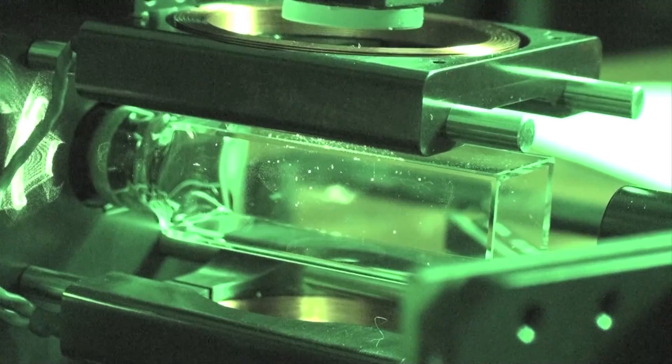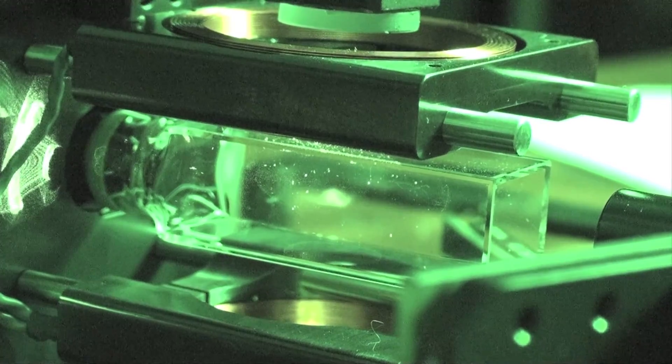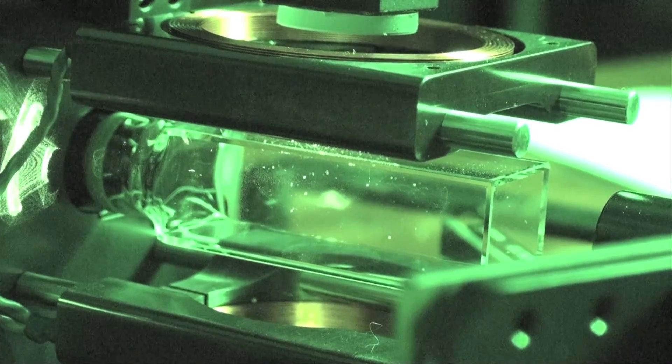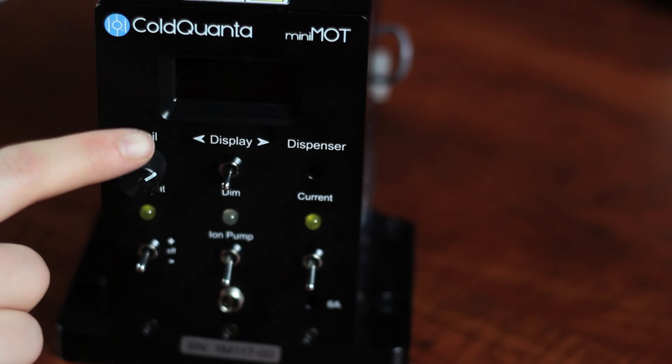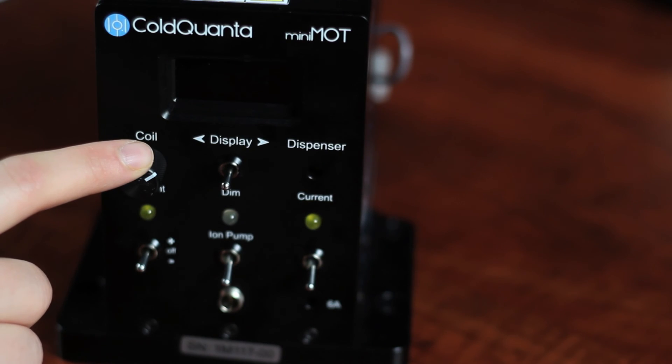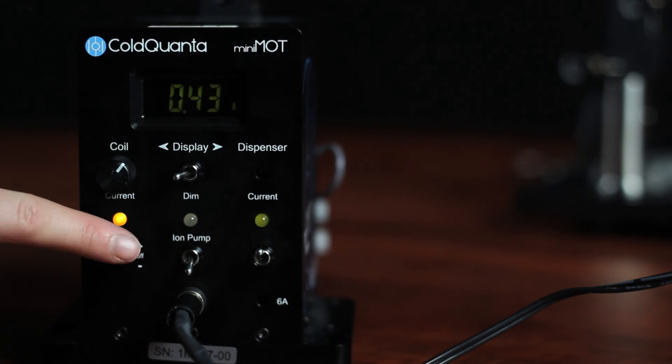Now for the exciting part, finally getting a MOT. Ideally, with proper alignment and polarization, a small MOT should be present when the fields are applied. Start by setting the appropriate coil current, in this case half an amp, and turning the coil current on either negative or positive. Check your screen for fluorescence, and if nothing is visible, change the coil direction. A magnet deflects the trap and can be used to spot a small MOT.